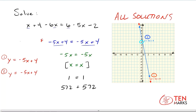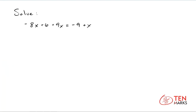Let's try another problem. Here's another equation: negative 8x plus 6 plus 9x equals negative 9 plus x. To find what type of solution this system of equations will have, begin by simplifying the left side. So you have negative 8x plus 9x, which leaves you with x plus 6 on the left.